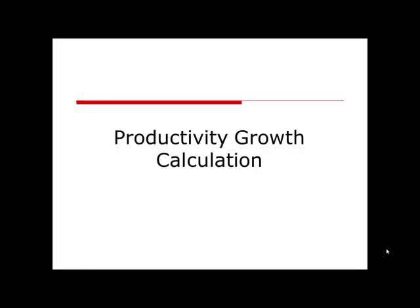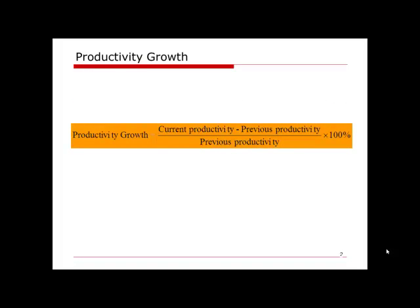In this section, we'll talk about productivity growth calculation. Productivity growth is a measurement of the productivity change from previous time period to current time period. To calculate it, we need to remember the previous productivity is used as the denominator because we are measuring the change compared from the previous time period. The numerator is the difference between current productivity and previous productivity. This is calculated as a percentage, so we divide by the previous productivity and convert everything to 100%.